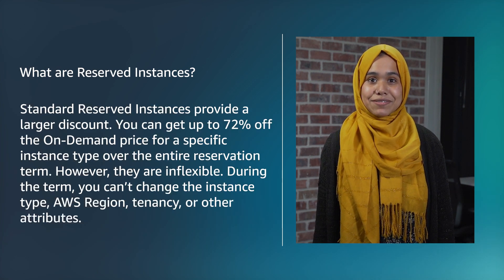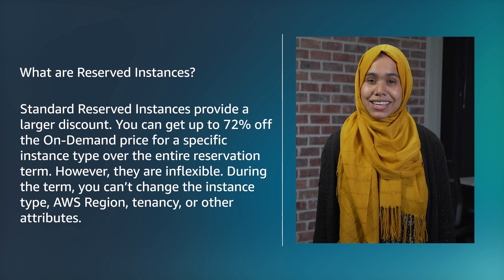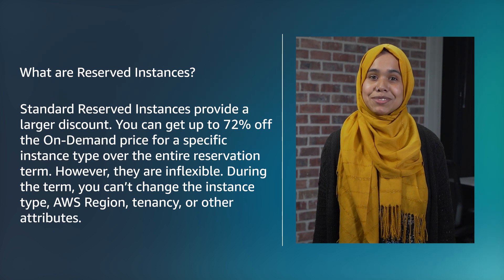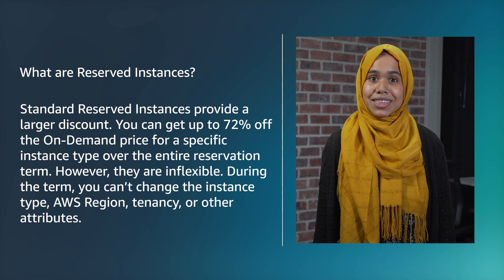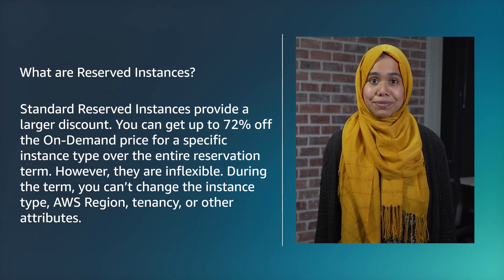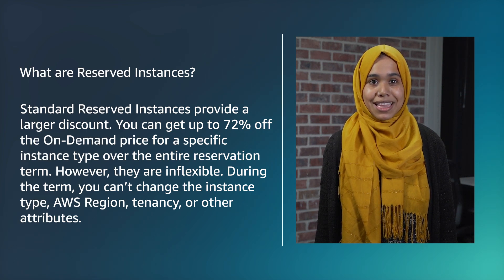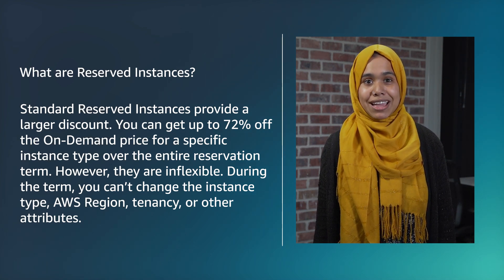Standard reserved instances provide you a larger discount. You can get up to 72% off on the on-demand price for a specific instance type over the entire reservation term. However, they are inflexible. During the term, you can't change the instance type, AWS region, tenancy, or other attributes.